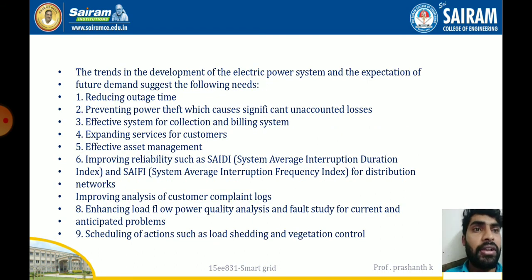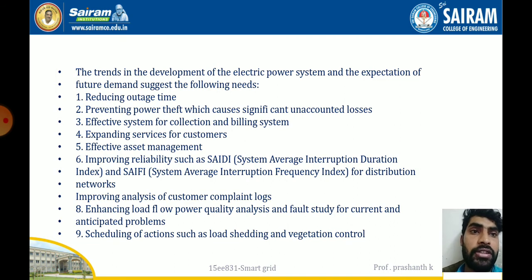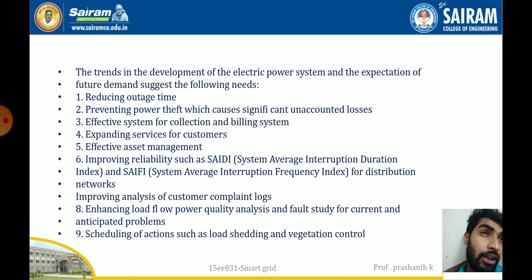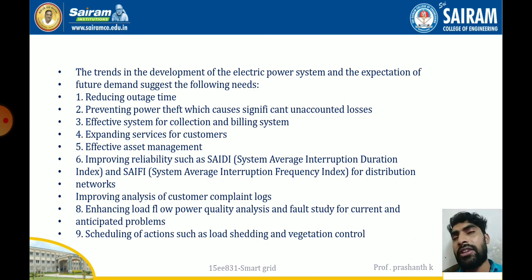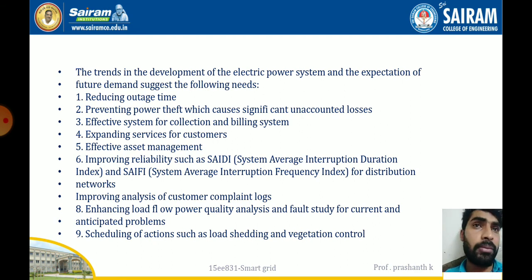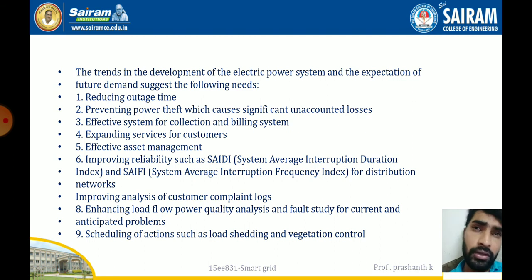The trend in the development of the electrical power system and expectations of future demands suggest the following needs: reducing outages and preventing power theft, which causes significant unaccounted losses. For example, in village areas, people place two wires into transmission lines and utilize the power supply unknowingly — that is power theft.